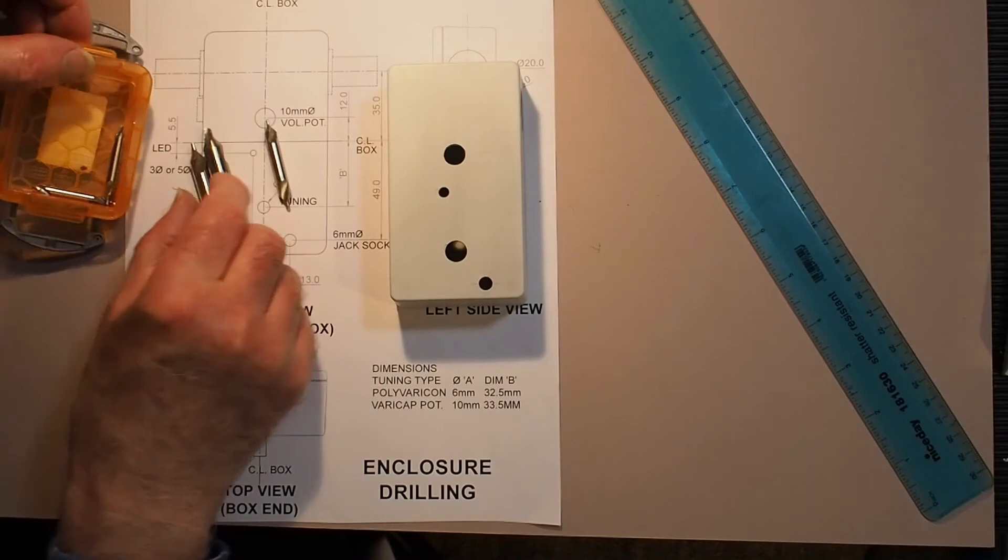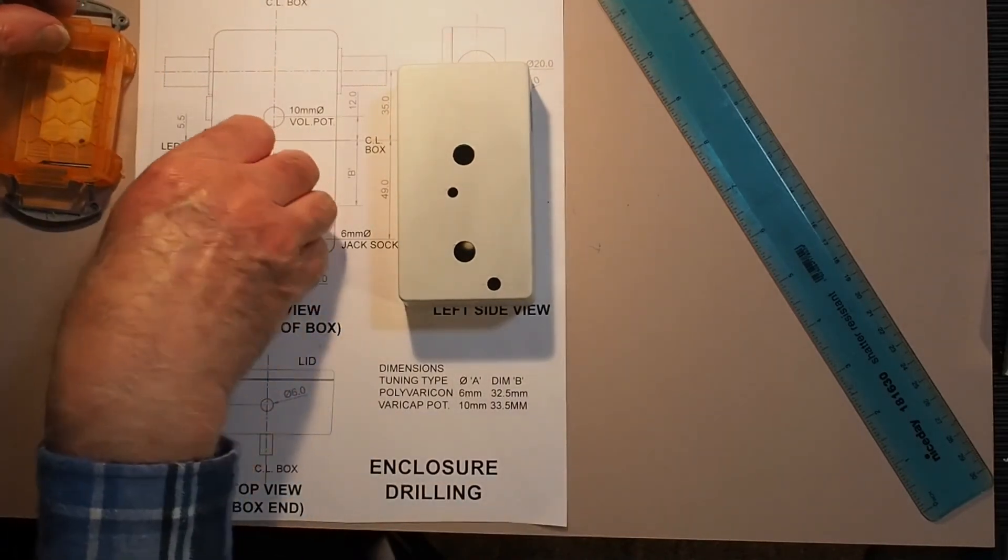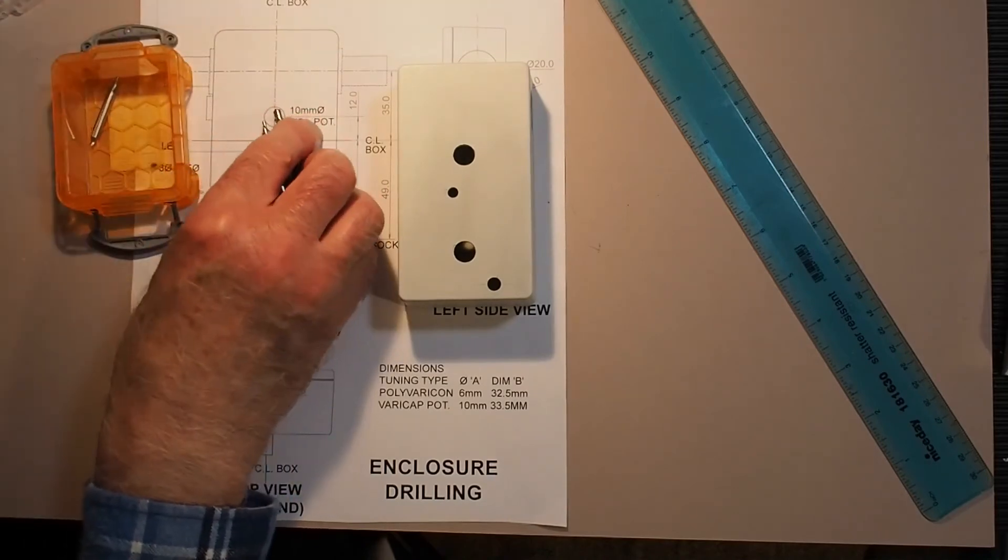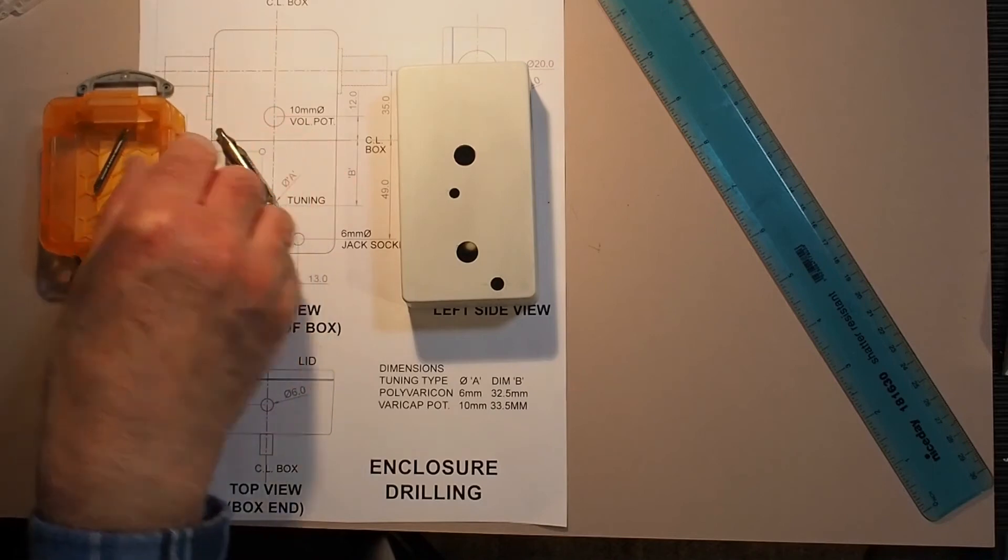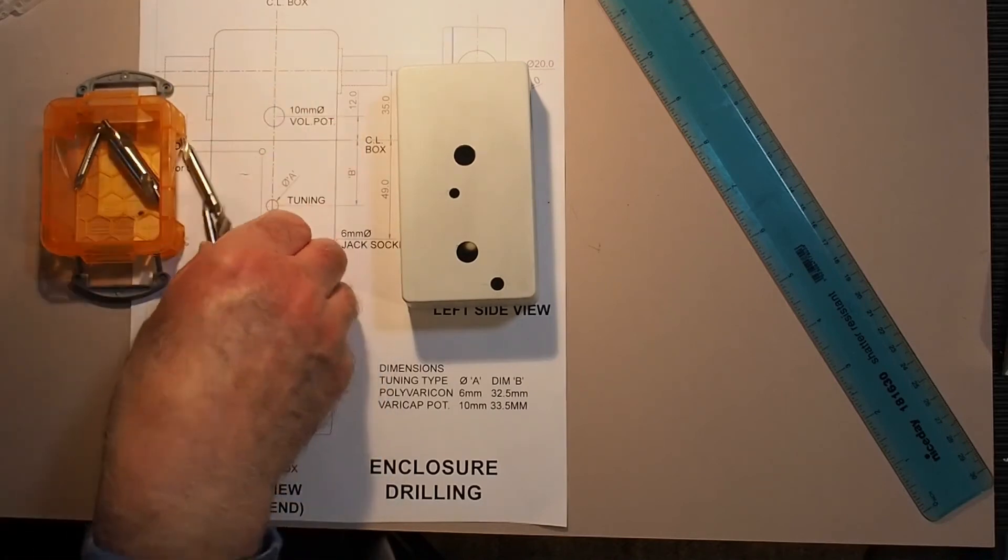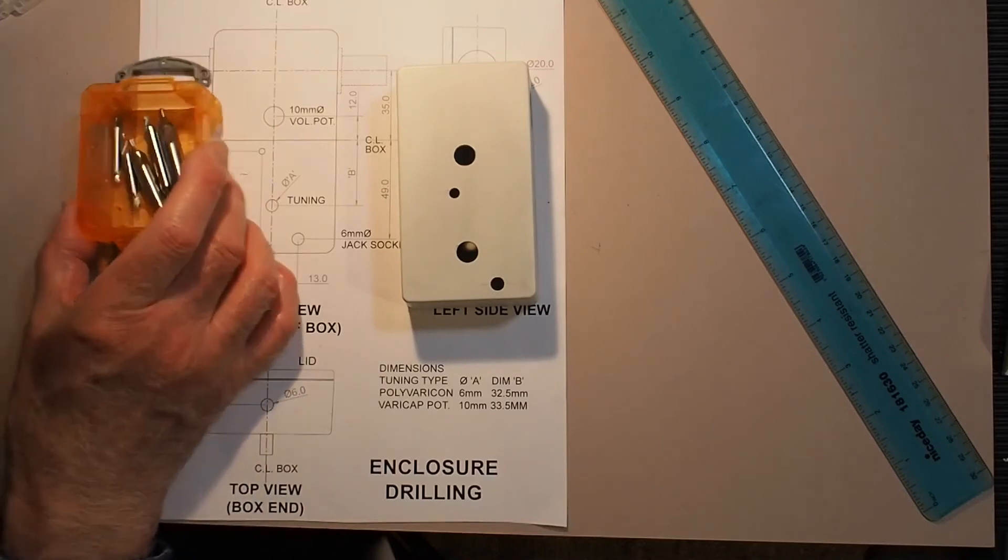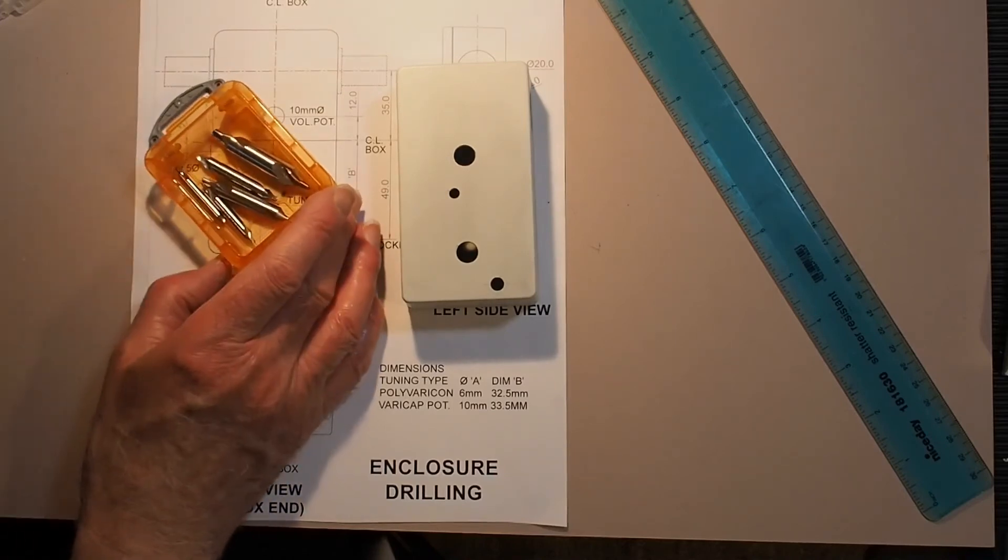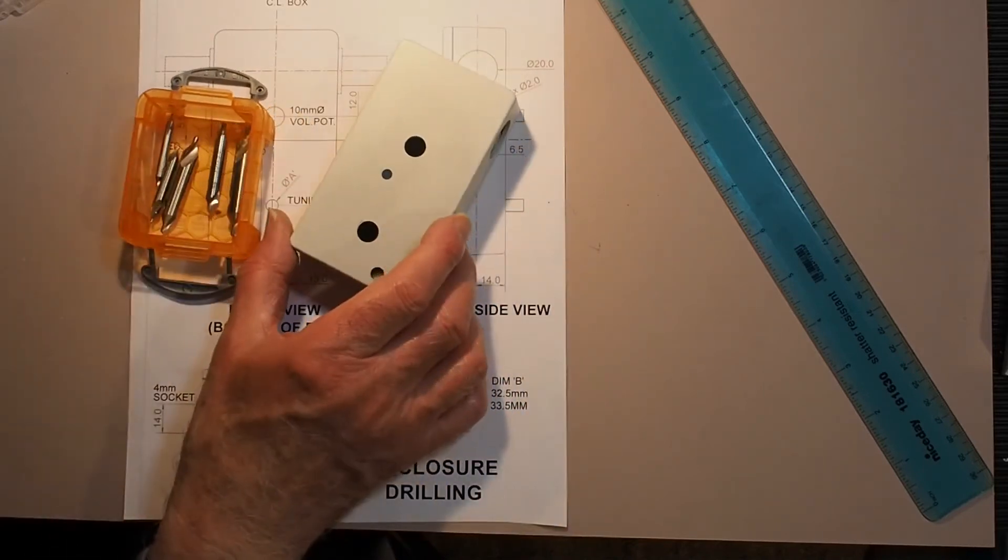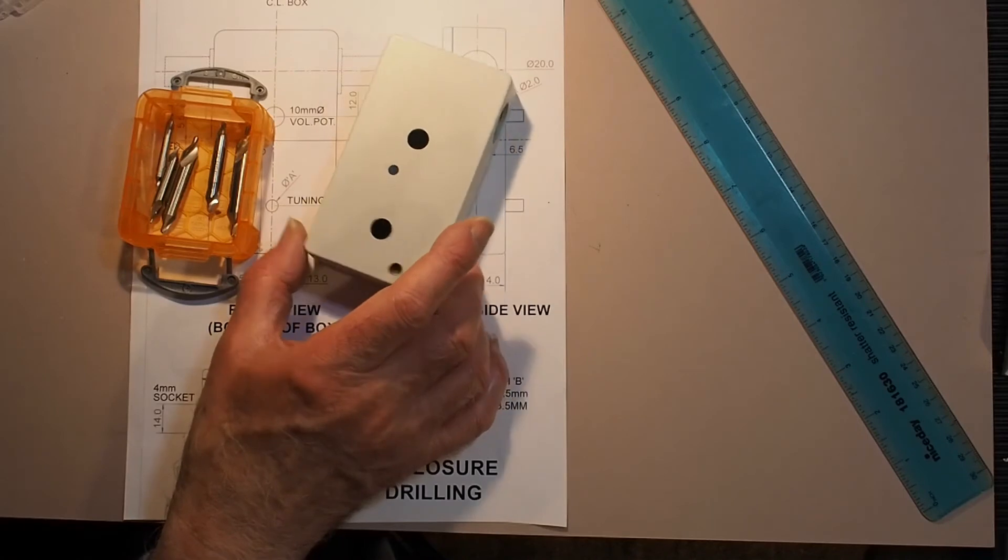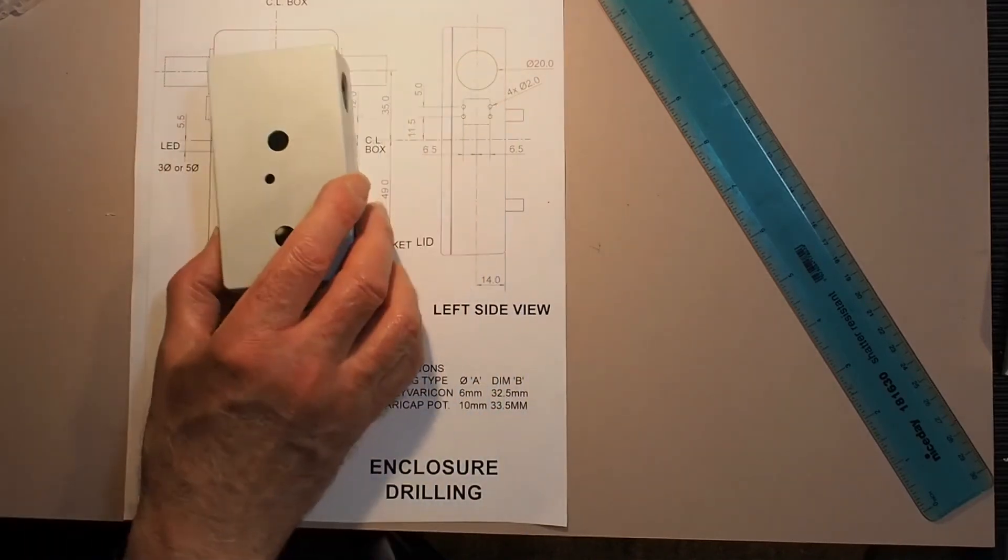You can get these in sets - I've got 4 millimeters up to 10 millimeters. Along with the stepped drill, you can get them at very reasonable prices from eBay. So well worth getting if you think you're going to do a lot of drilling into plastic or aluminum sheet and the like.